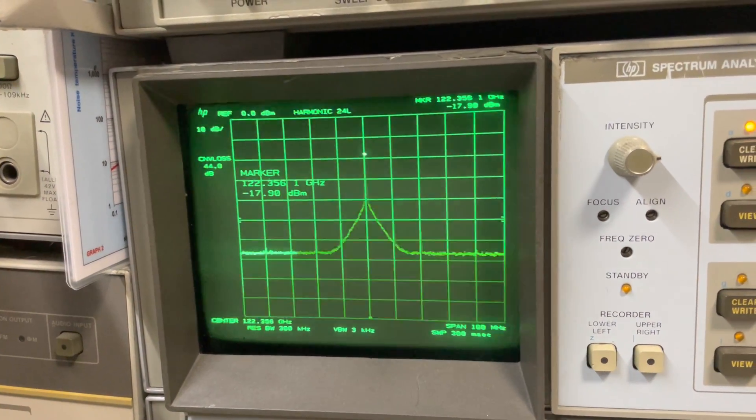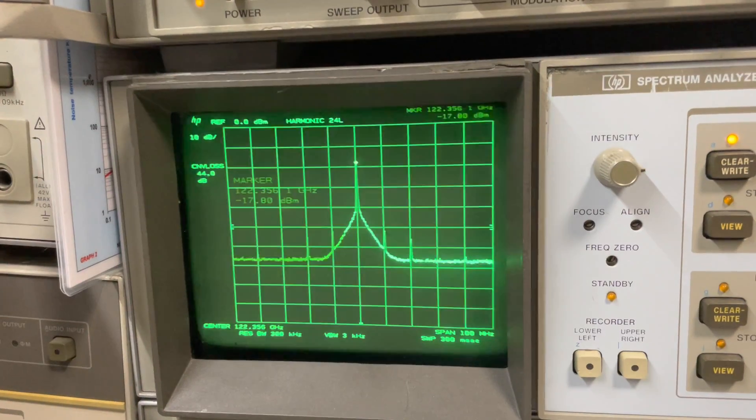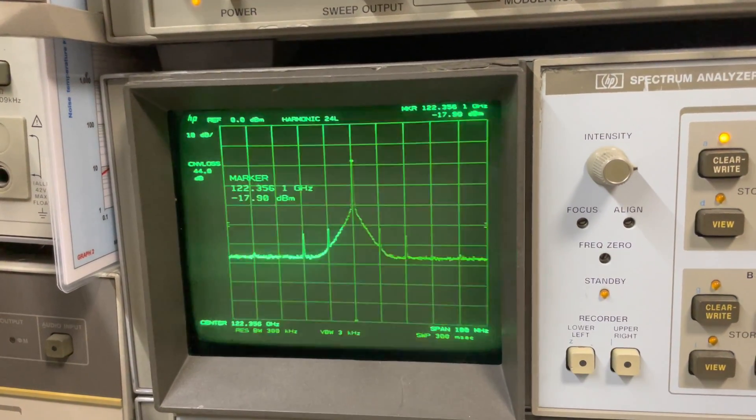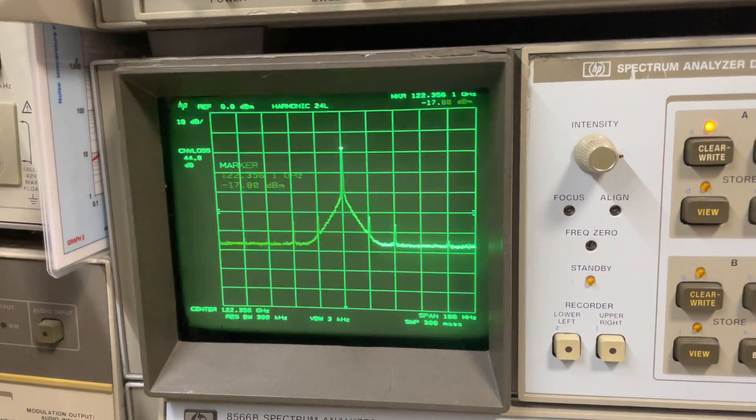You can also see the spurs 10 megahertz either side of the carrier, which I believe are a result of the onboard 10 megahertz oscillator leaking through.